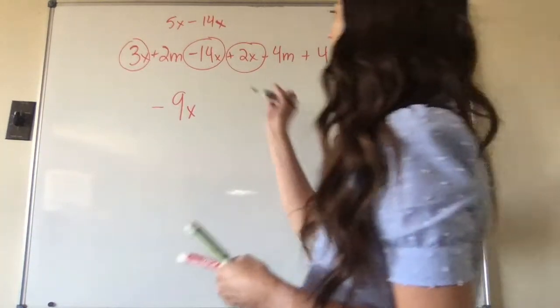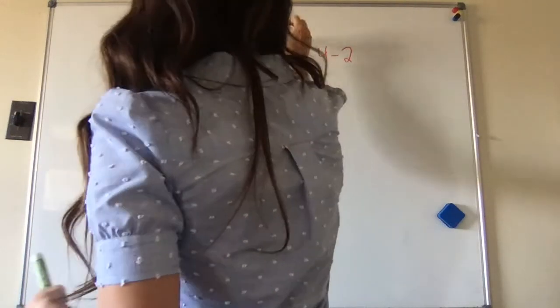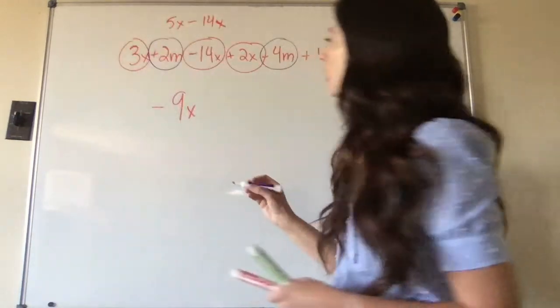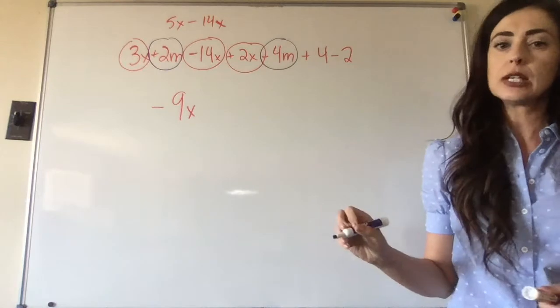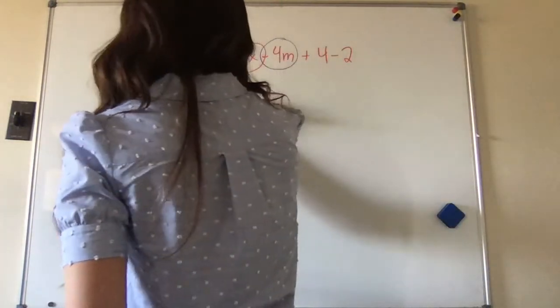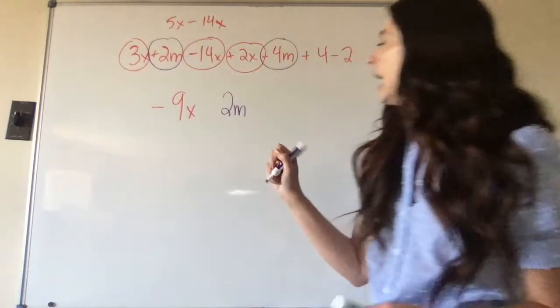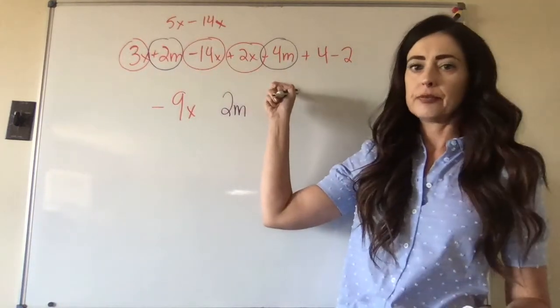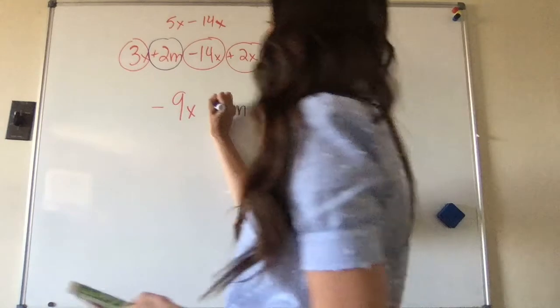So now let's look at our m's. We have positive 2m and negative 4m. Signs are different. Find the difference. What's the difference between 2 and 4? 2. So we're left with 2 m's. And which one's greater? 4. And it's negative. So it's going to be minus.